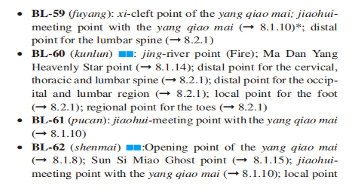Bladder 60 is the Jing River Point, Fire point, and Ma Dan Yang Heavenly Star Point. It is the distal point for the cervical, thoracic, and lumbar spine, and the distal point for the occipital and lumbar region. It is also the local point for the foot and regional point for the toes. Bladder 61 is the Jiao Wei meeting point for the Yang Qiao Mai.